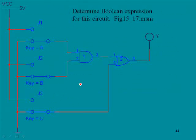Here we have several circuits, and these all come from your multi-sim package. You can pull these circuits up and activate them in multi-sim. When you do so, pressing the letter A, B, or C will select the logic levels going to these gates. Our purpose here is to determine the Boolean expression. This particular one is from circuit 15_17.